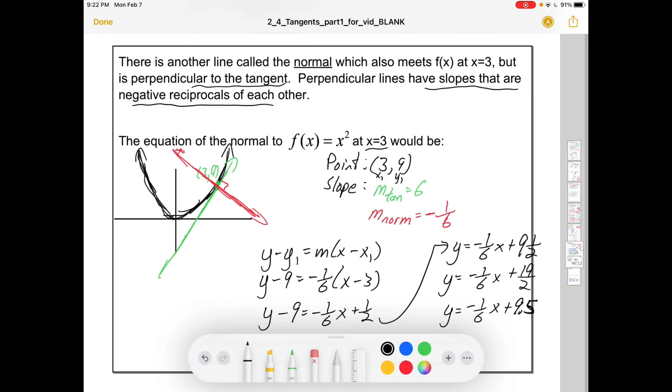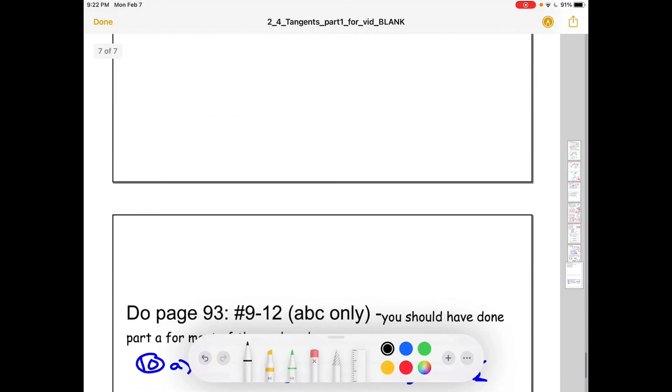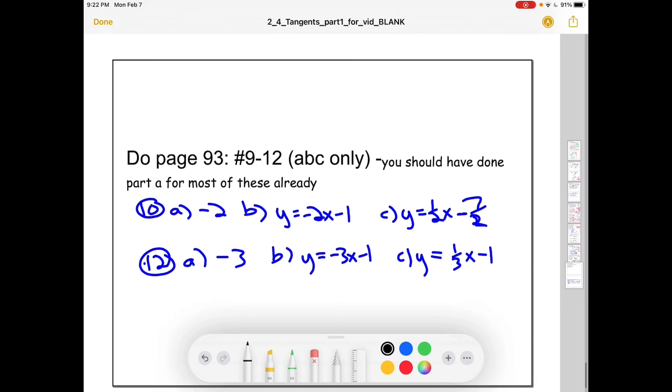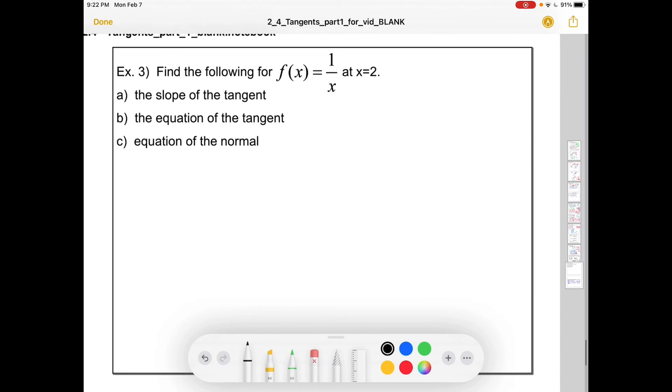That's really the extent of what we're doing today. We can revisit page 93 and you've probably already done part a on these questions. But you can do b and c as well. There are the even answers. If you want to you can hang out and we'll do one more example that's like this.